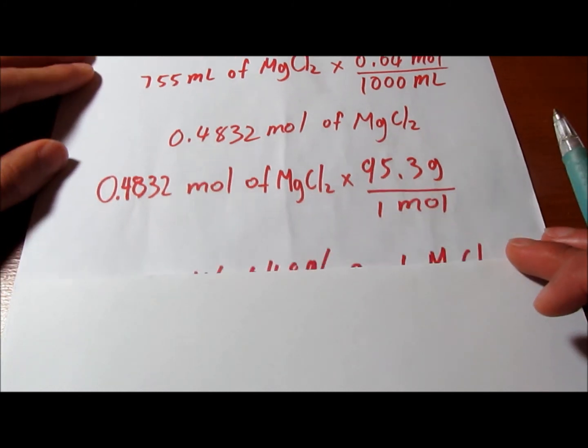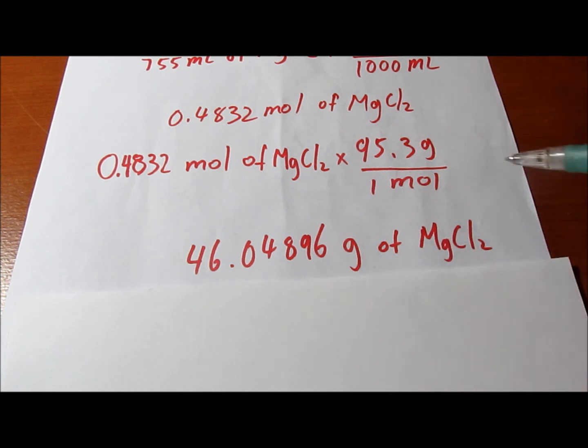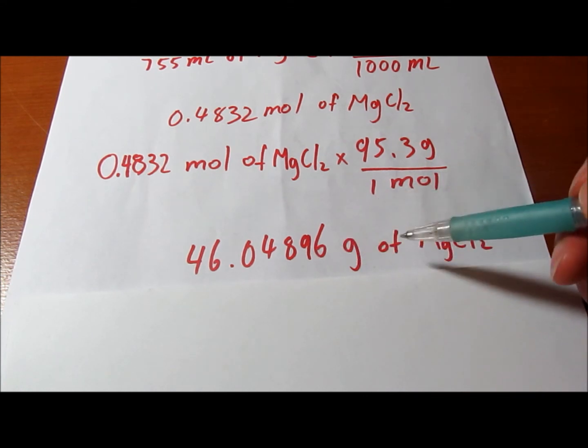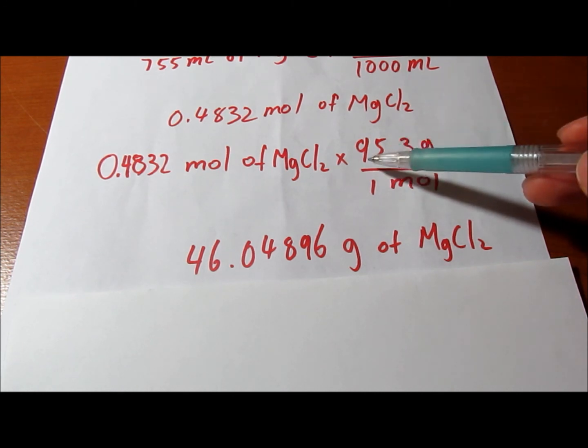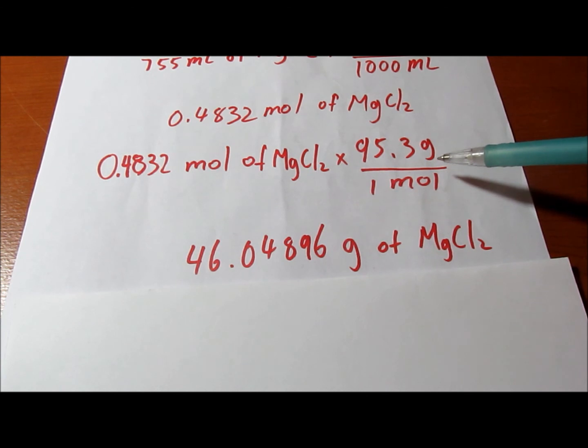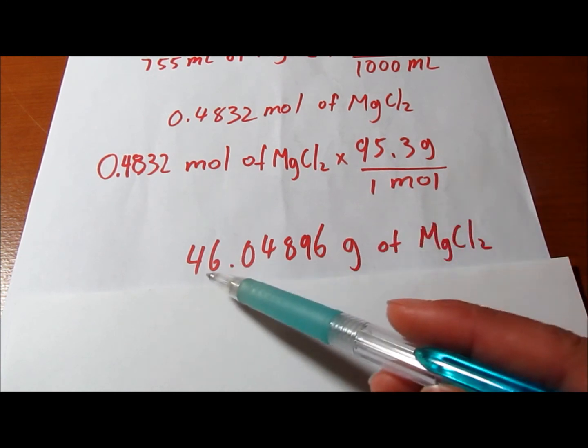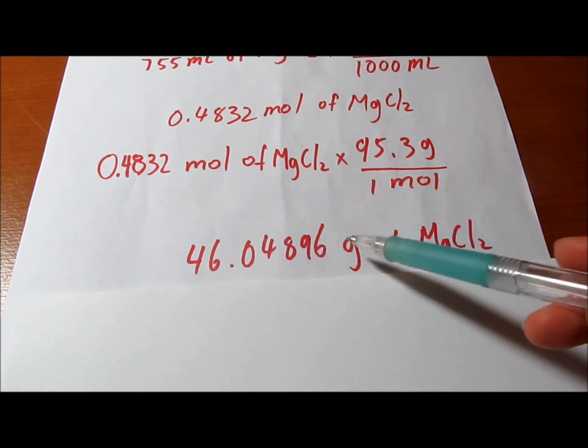The final answer would be 46.04896 grams of magnesium chloride. Now remember there are only three significant numbers up here so the final answer should be 46.0 grams of magnesium chloride.